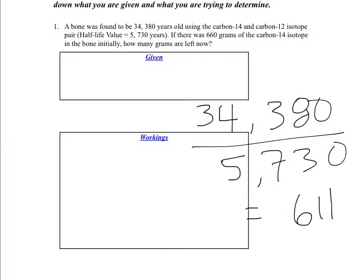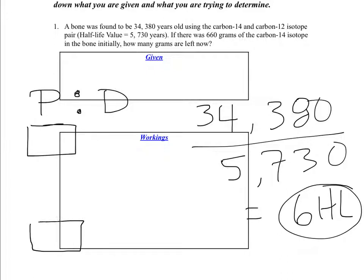So we now know that the parent isotope got halved six times. Now, if there was 660 grams of the parent isotope in the bone initially, how many grams are left now? So anytime you get grams, you always want to set yourself up with a parent to daughter ratio. This represents the amount of parent that was in the bone in the beginning or initially, and this is how many grams of parent isotope is in the bone now. So if we had 660 grams initially, this problem will be done when we know how many grams are left right now.